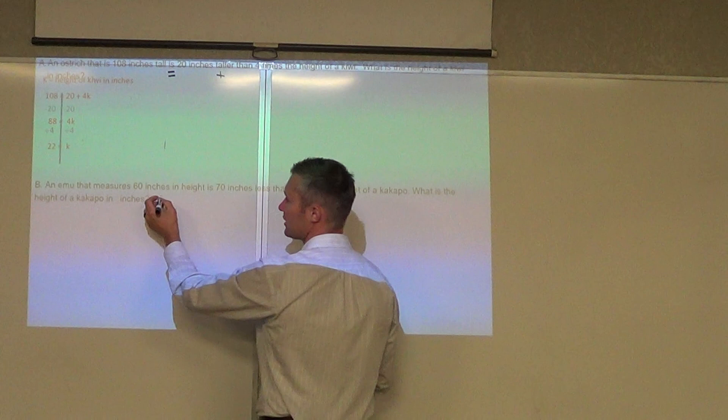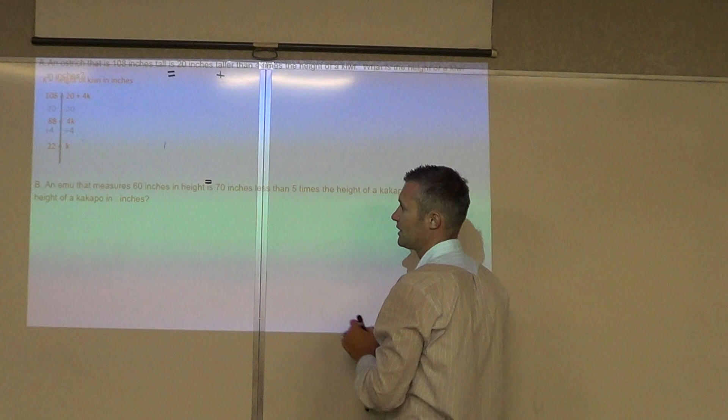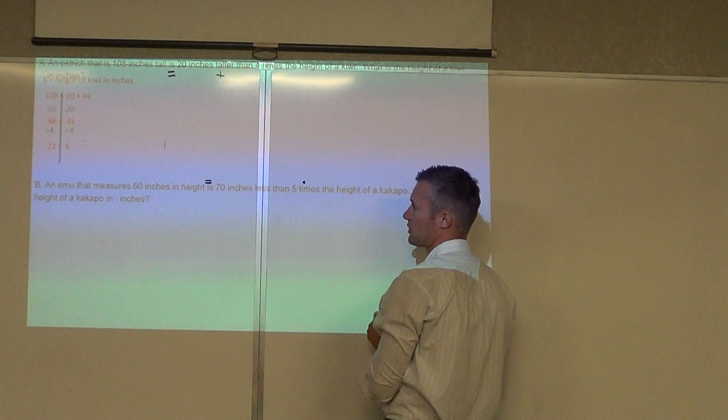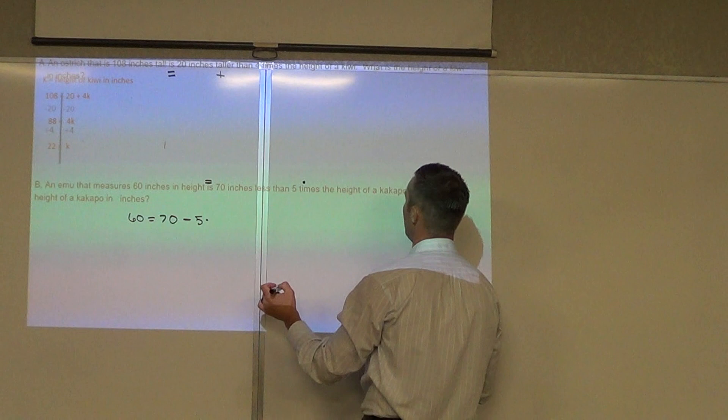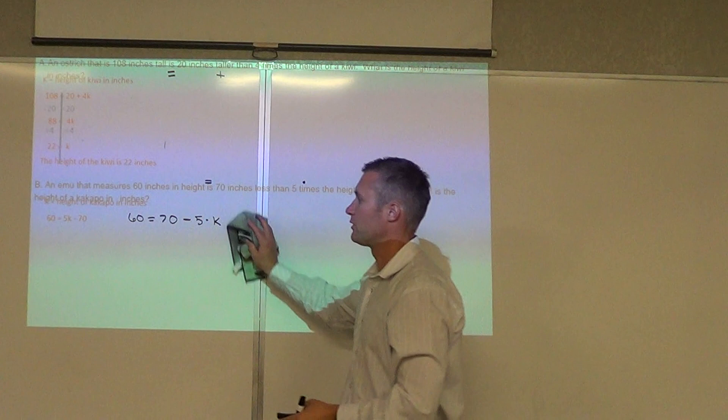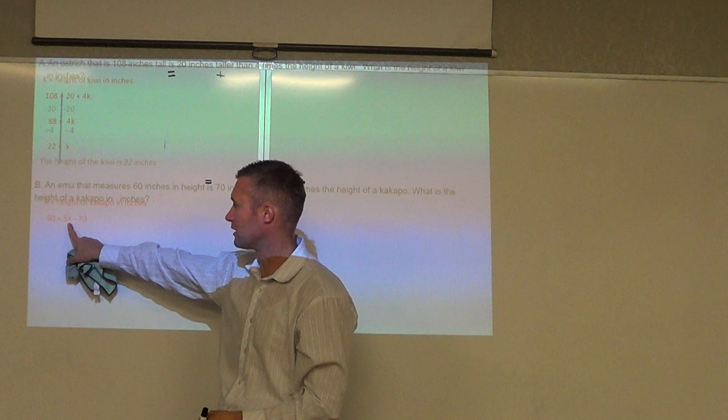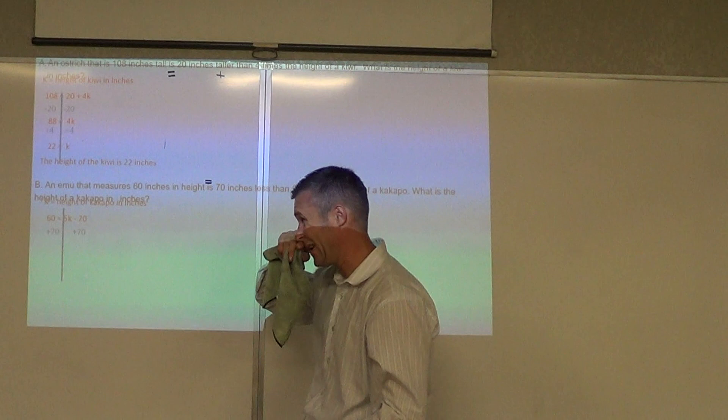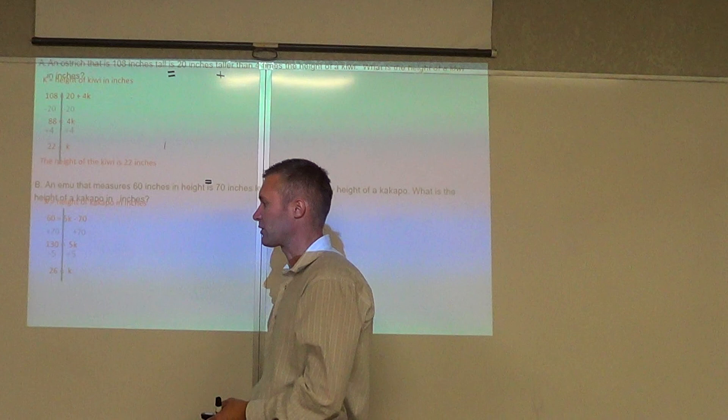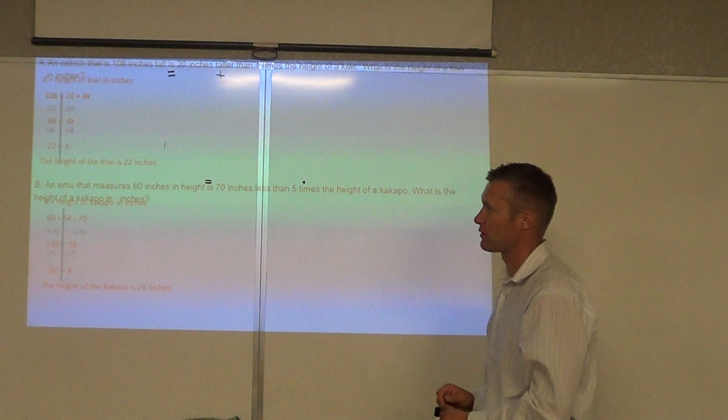An emu that measures 60 inches in height, so 60 inches is, remember that means equals, 70 inches less means subtracting right there, than 5 times, again that would mean multiplication. So 60 inches is 70 inches less than 5 times the height of that kakapo. And now we can solve from there. It's 70 inches less than, so it's less than 70. So now we add that 70. It should be 5k minus 70. Then we add the 70, which is 130, and then divide by 5, which would give us 26. So the height of the kakapo is 26 inches.